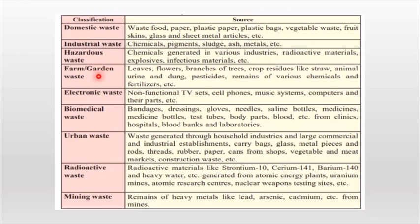Next, we have farm or garden waste — waste generated like leaves, crop material, roots, dead plants, and pesticides all come under garden waste. Then there is electronic waste: non-functional stuff that we throw away which is of no use to us. Next is biomedical waste — medical waste such as bandages, dressings, injections, and test tubes all come under biomedical waste. Biomedical waste has to be treated properly before disposal.